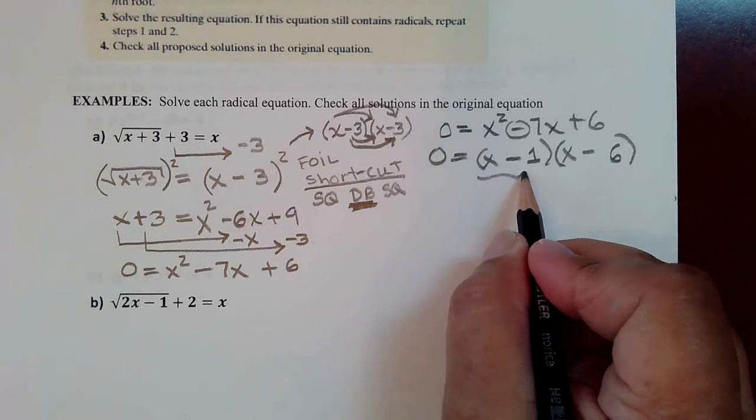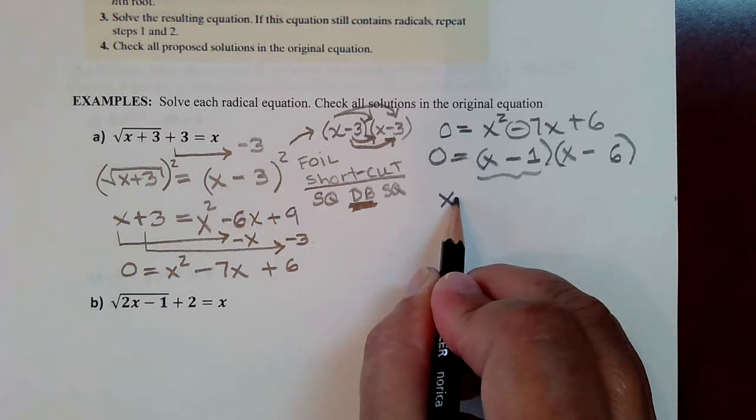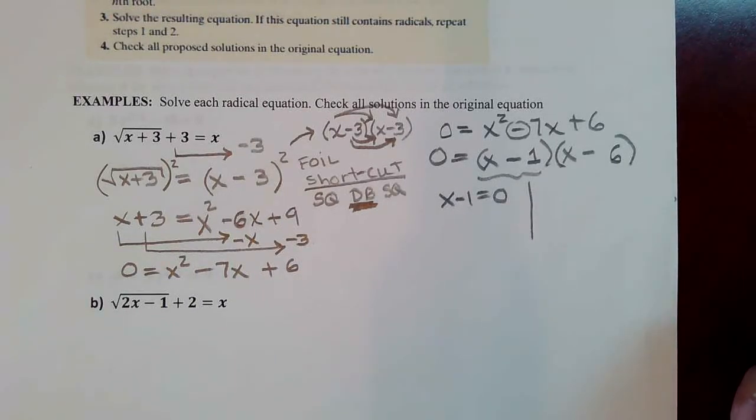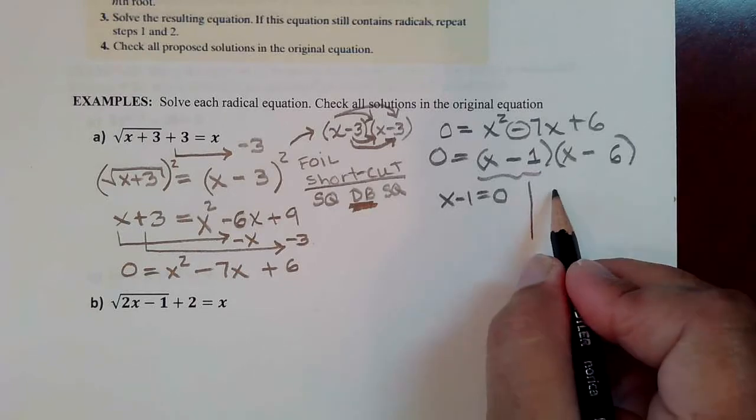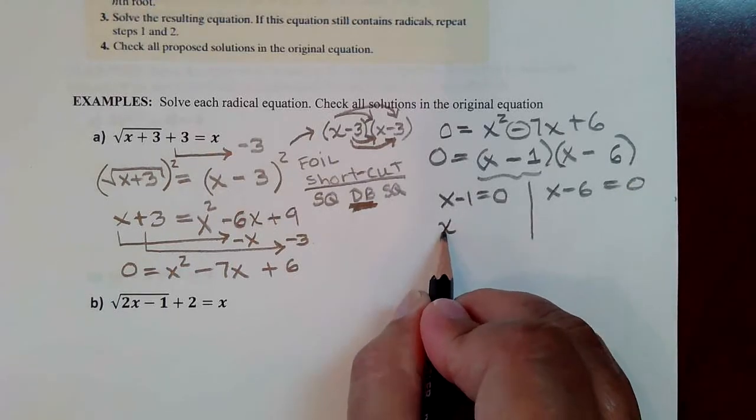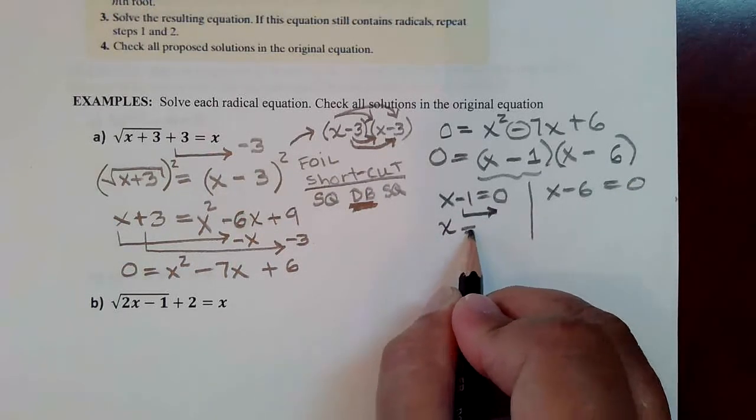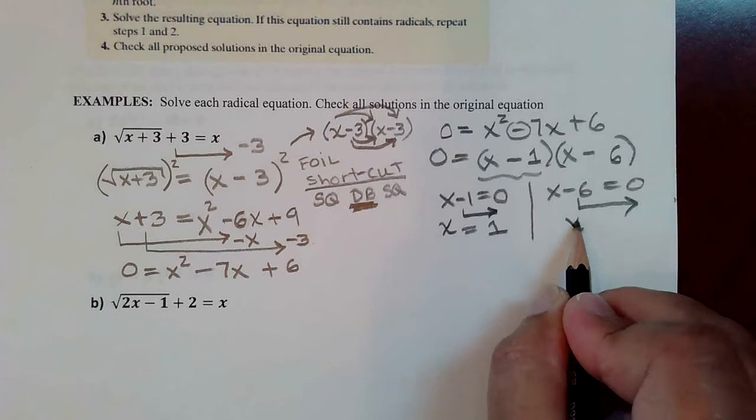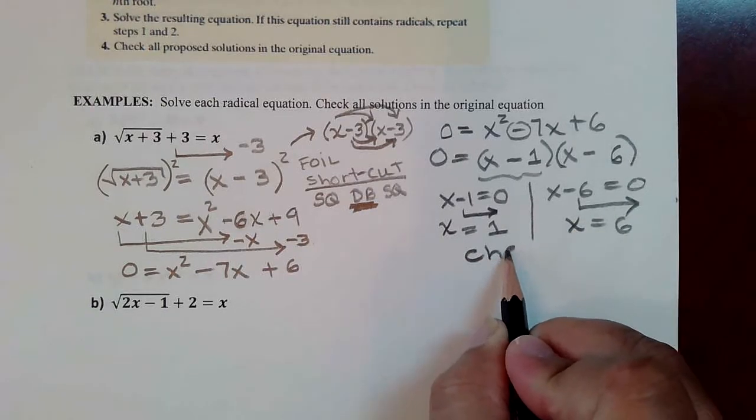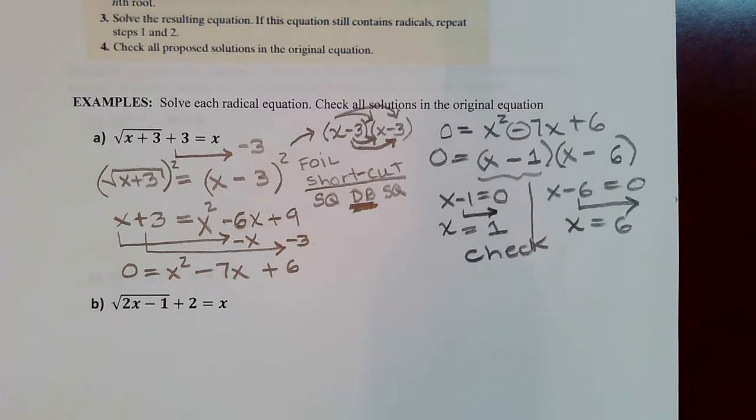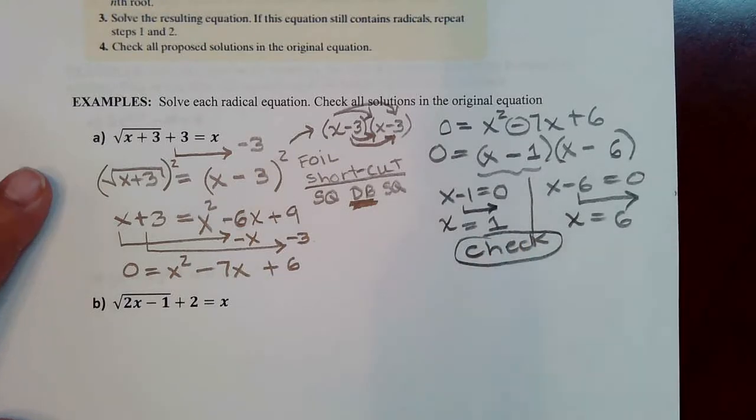And then the solutions come from taking each factor. Now be careful, though, because a solution is not really a solution until you check it when you're solving radical equations. The other factor would give you this equation. So supposedly, by the time you bring the negative 1 to the right-hand side, perhaps x equal to 1 is a solution, and perhaps 6 is a solution. You need to check these to make sure that they're not extraneous solutions because sometimes both of them don't work, sometimes just one of them works, and sometimes both of them are good answers.